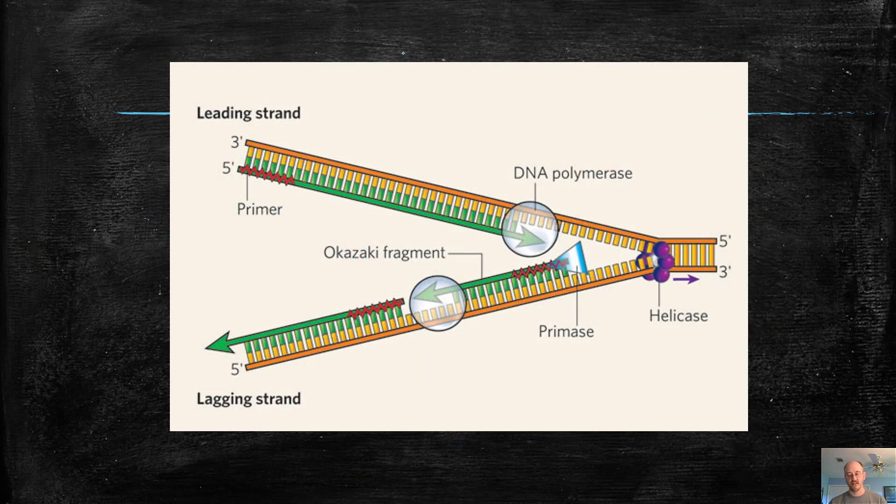So you can see that again here, just another drawing. We have, in this case, helicase going to the right. The leading strand always follows helicase. The lagging strand is built in the opposite direction from the direction that helicase is going in. It's built in chunks. And every chunk has a primer.